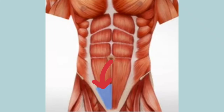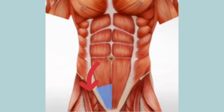A direct inguinal hernia protrudes through the Hesselbach's triangle, whereas indirect inguinal hernias come from the lateral side through the deep inguinal ring.